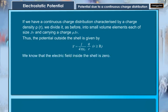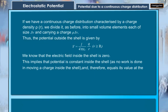We know that the electric field inside the shell is 0. This implies that potential is constant inside the shell as no work is done in moving a charge inside the shell and therefore equals its value at the surface.